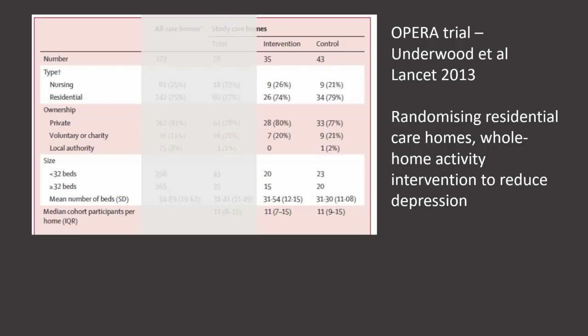The OPRA trial was conducted in 78 residential care homes for older people in the UK. The intervention was multifaceted and designed to increase the physical activity of residents and thereby reduce depression. The trial had an uneven randomisation ratio, so we expected a larger number of clusters in the control group than in the intervention group. But we expected the percentages of clusters with different characteristics shown in the table to be similar — and you can see there's not much difference between the percentages, including the mean number of beds and the median cohort participants per home, in spite of randomising only 78 units.